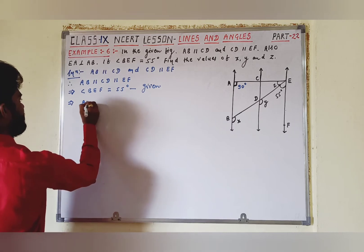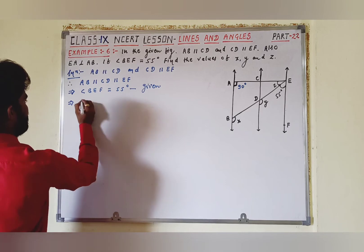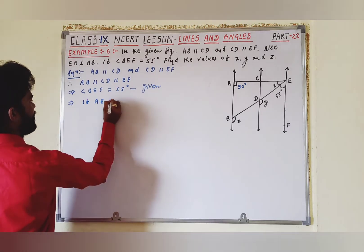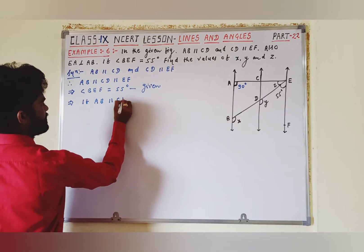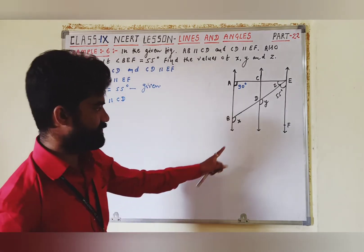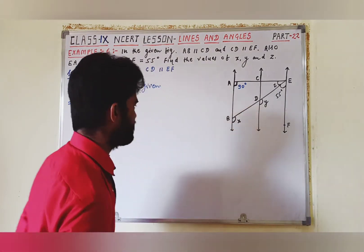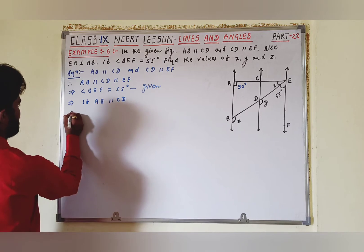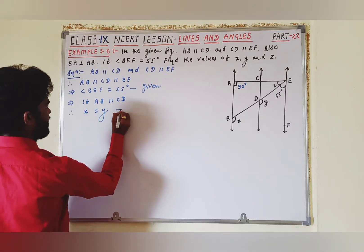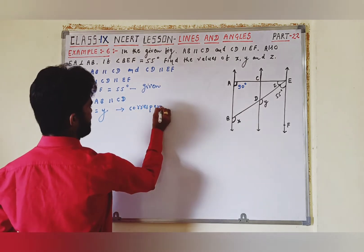If AB parallel to CD, therefore X is equal to Y — corresponding angles से। मतलब जब आप Y की value निकालोगे या X की value निकालोगे, तो दोनों की value same हो जाएगी।